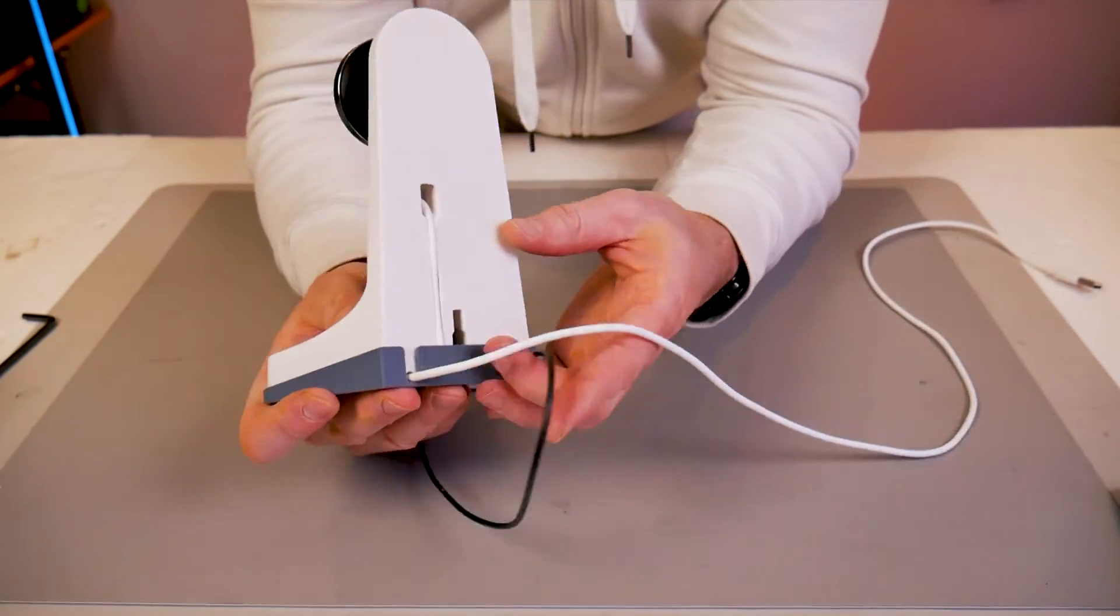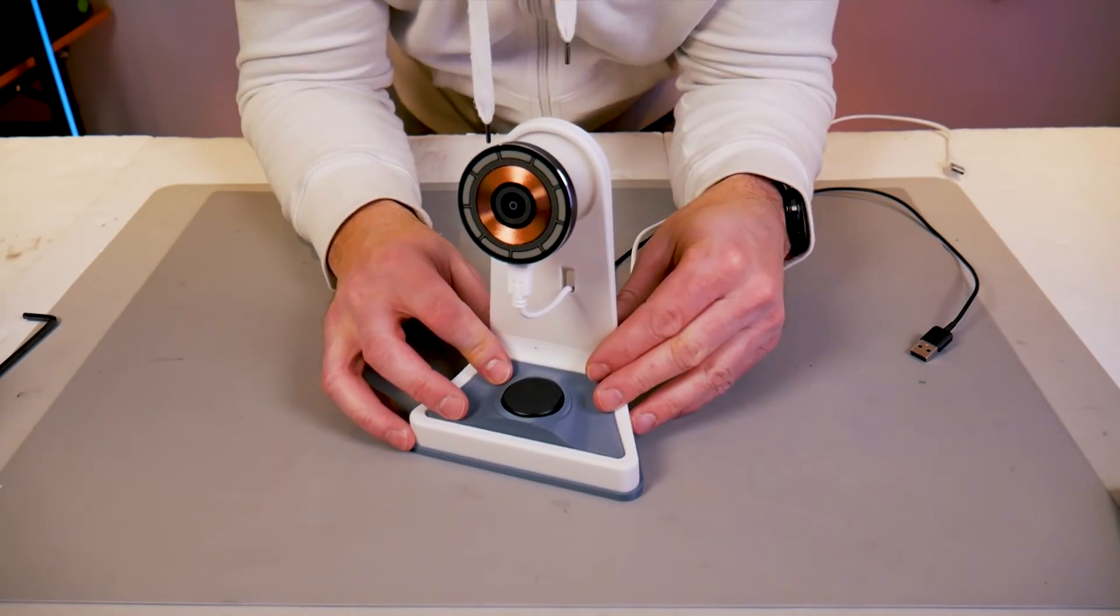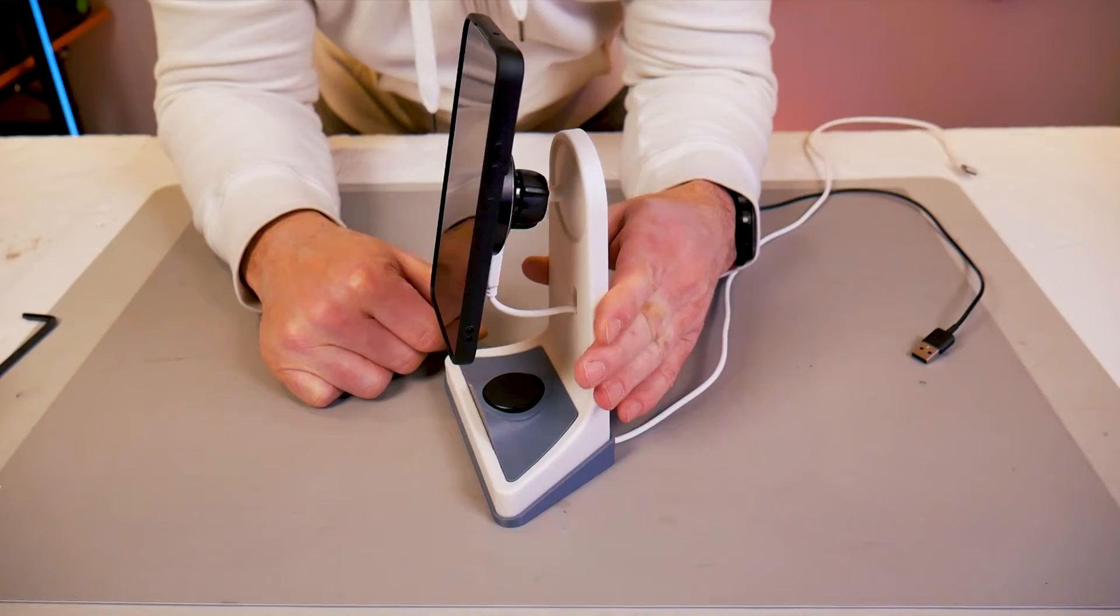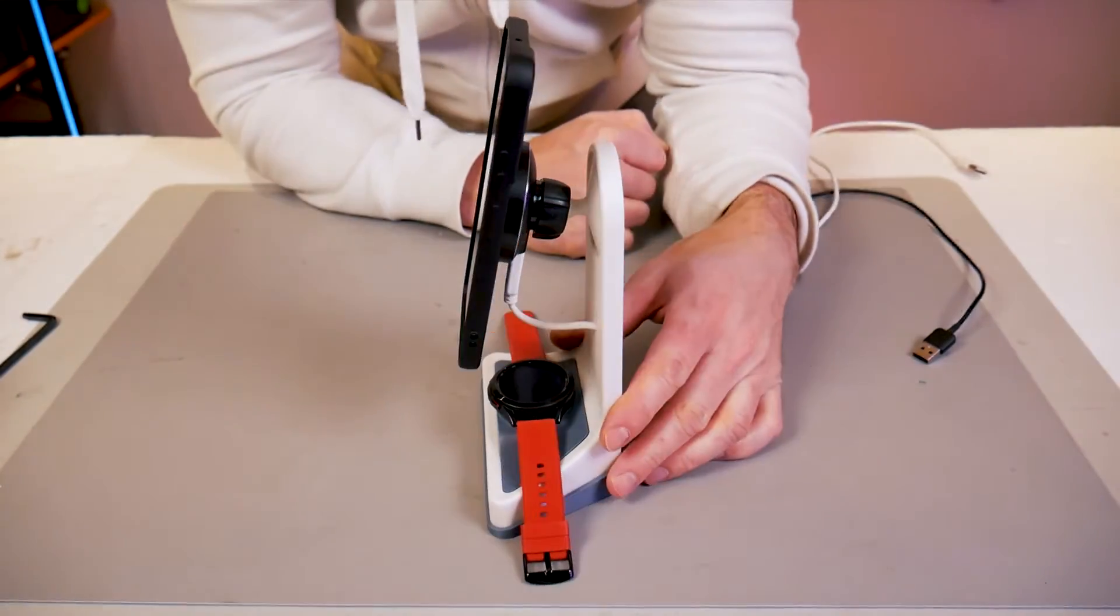If you want to make things permanent you can of course glue these pieces in place but perhaps later on you might change your mind and want to print something in a different color to change up the style. And that is how simple it is to assemble and now it's ready to accept the phone and watch.